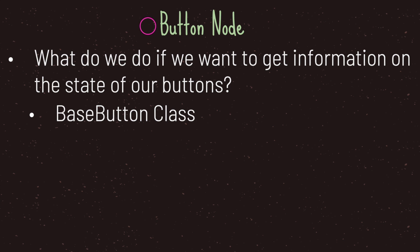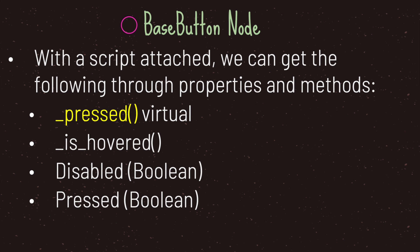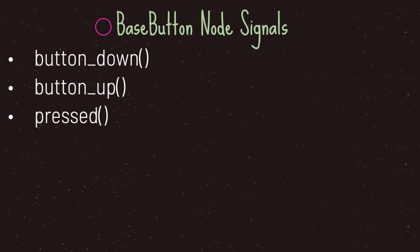In most cases we want our button to do something — for example, get information on the state of our buttons. To do that we access properties and methods in the base button class. The most important one is the pressed method, which is a virtual method — every time our button is pressed, whatever code is inside it will run. There's also the is_hovered method to check if the mouse is over the button, the disabled property to enable or disable the button, and the pressed property to retrieve whether a button has been pressed. Most importantly, the base button provides three signals: button_down, button_up, and pressed — in most cases you'll want to use the pressed signal.